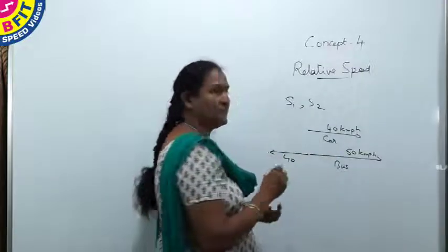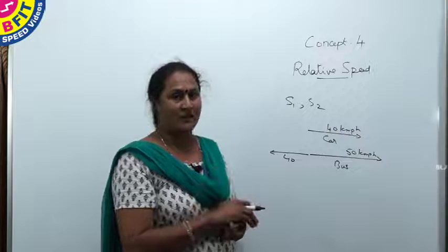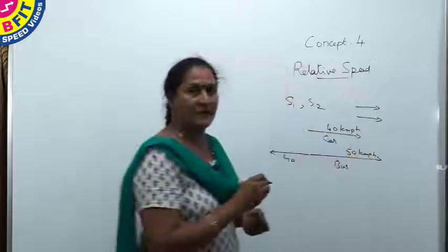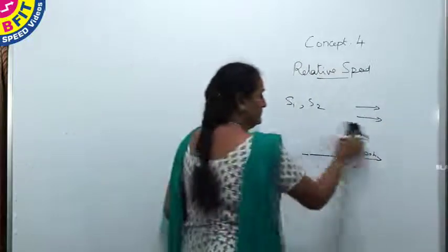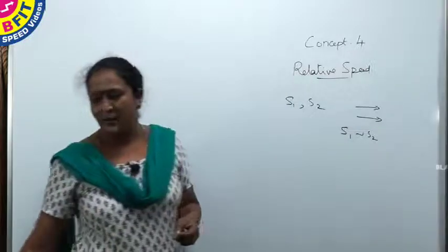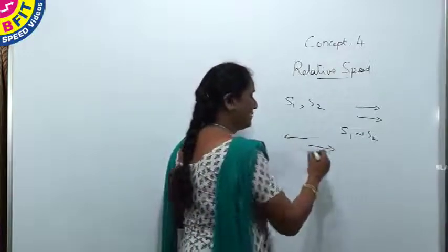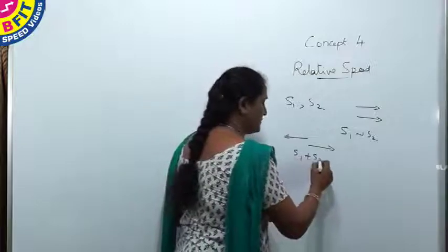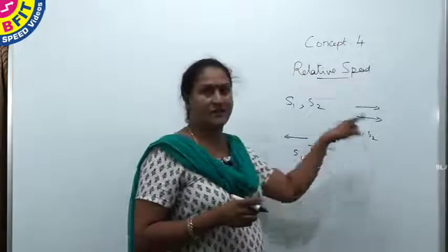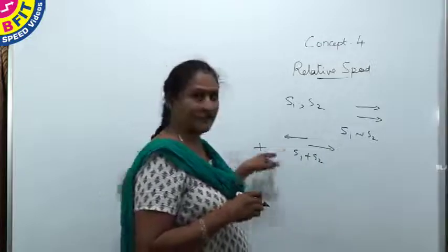If two moving bodies move with speeds S1 and S2, we calculate relative speed for same direction and opposite direction. When moving in the same direction, the relative speed is the difference of their speeds — whichever is higher, we subtract. For opposite direction, we use the plus sign — speeds intersect — so it will be the sum of their speeds.